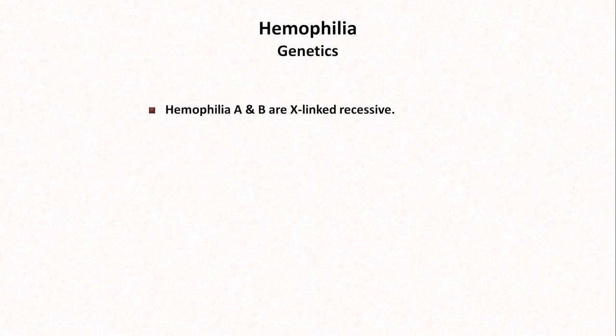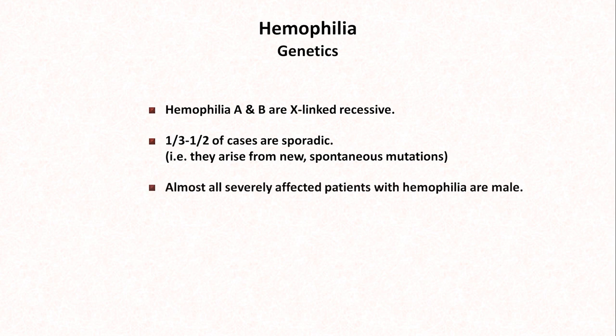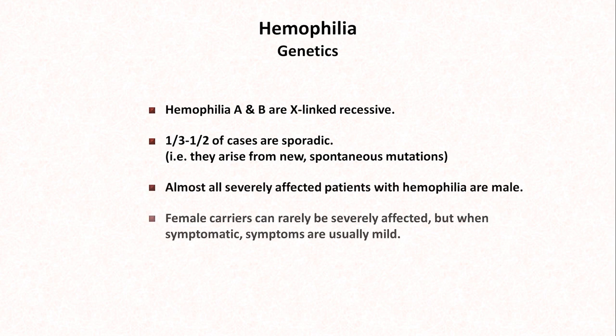Both hemophilia A and B are inherited in an X-linked recessive fashion, but one-third to one-half of cases are sporadic, meaning they arise from new spontaneous mutations. The net consequence of this is that almost all severely affected patients with hemophilia are male. Female carriers can rarely be severely affected, but when symptomatic, symptoms are usually mild. Hemophilia has no significant ethnic or racial predominance.